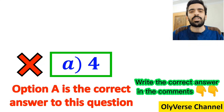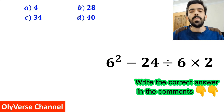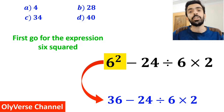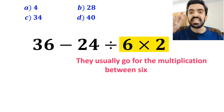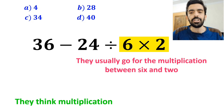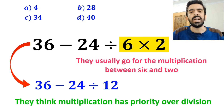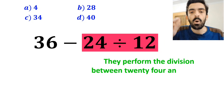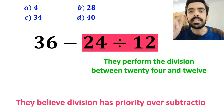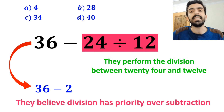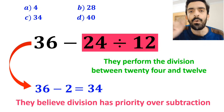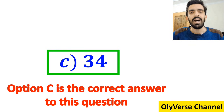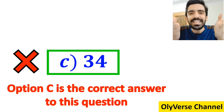However, it's not the correct answer. Some other people also start with 6 squared, simplifying to 36 minus 24 divided by 6 times 2. Then they go for the multiplication between 6 and 2 first, because they think multiplication has priority over division. So they rewrite the expression as 36 minus 24 divided by 12. Next, they perform the division between 24 and 12, giving 36 minus 2, which ultimately gives them the answer 34. They conclude that option C is the correct answer — but we were tricked, and it's not correct either.